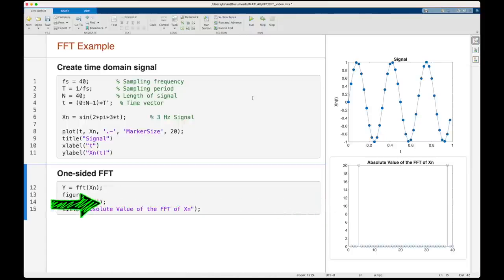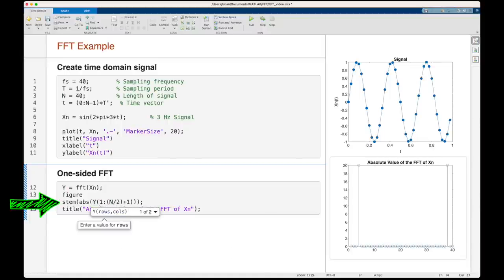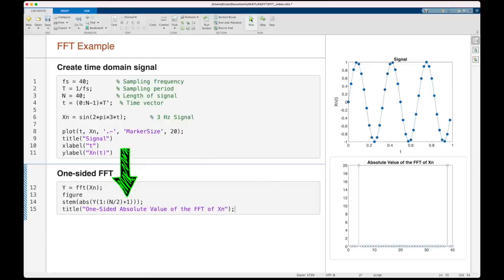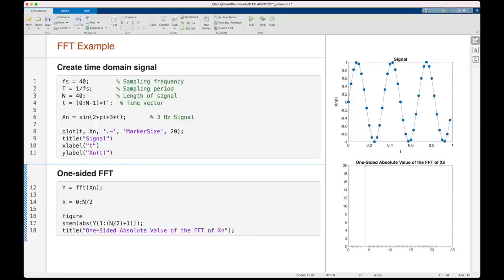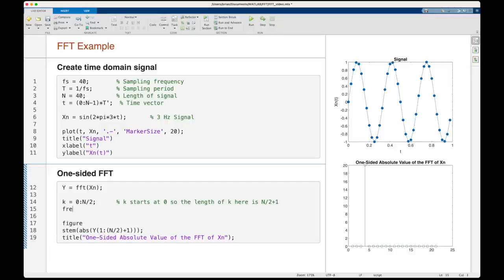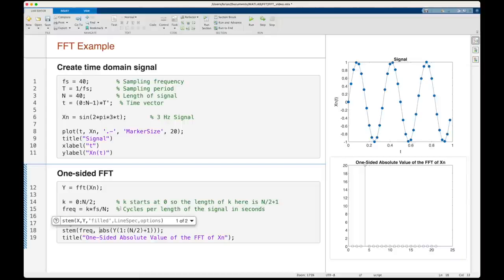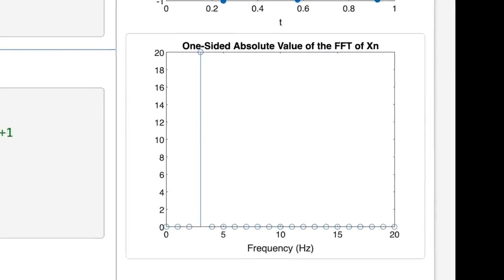Now, to get the one-sided FFT, we just look at half of this spectrum. But of course, since I have an even number of time samples, we need that plus one in there so that we can capture the Nyquist frequency as well. Alright? So, so far, so good. Except, now we want to plot this against frequency in Hertz. So we have K going from zero to N over two, to account for the 21 samples in our one-sided FFT. And we convert that to frequency by multiplying it by the sample frequency divided by the number of samples. And finally, we can plot this and, as expected, the peak is right at three Hertz.